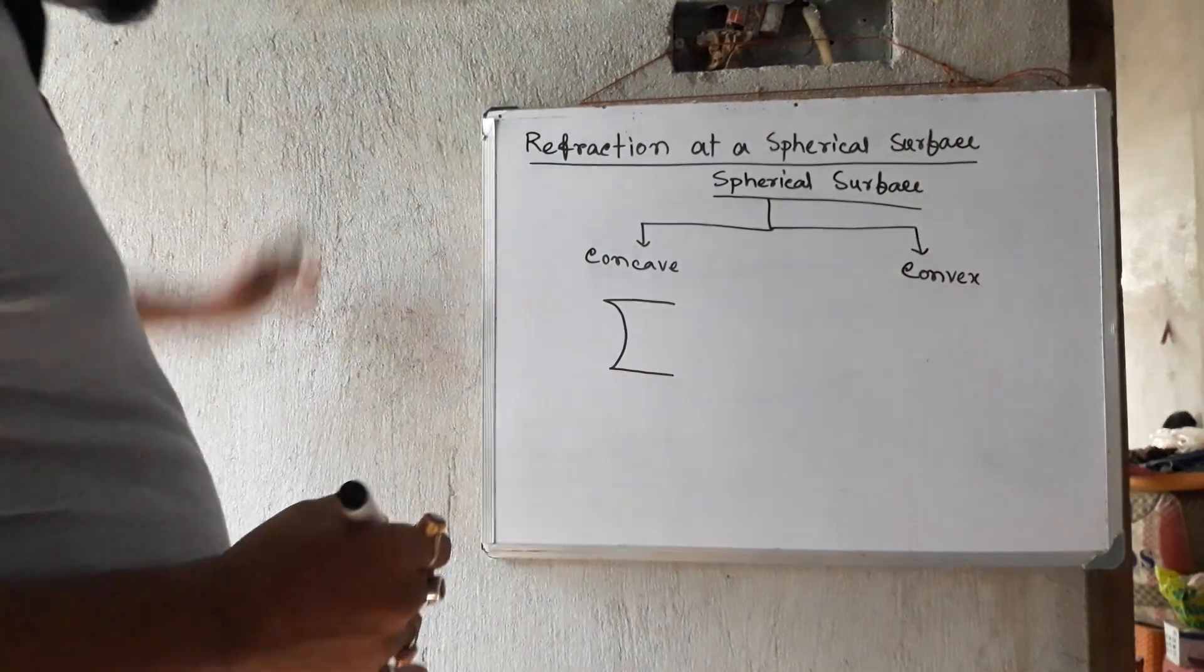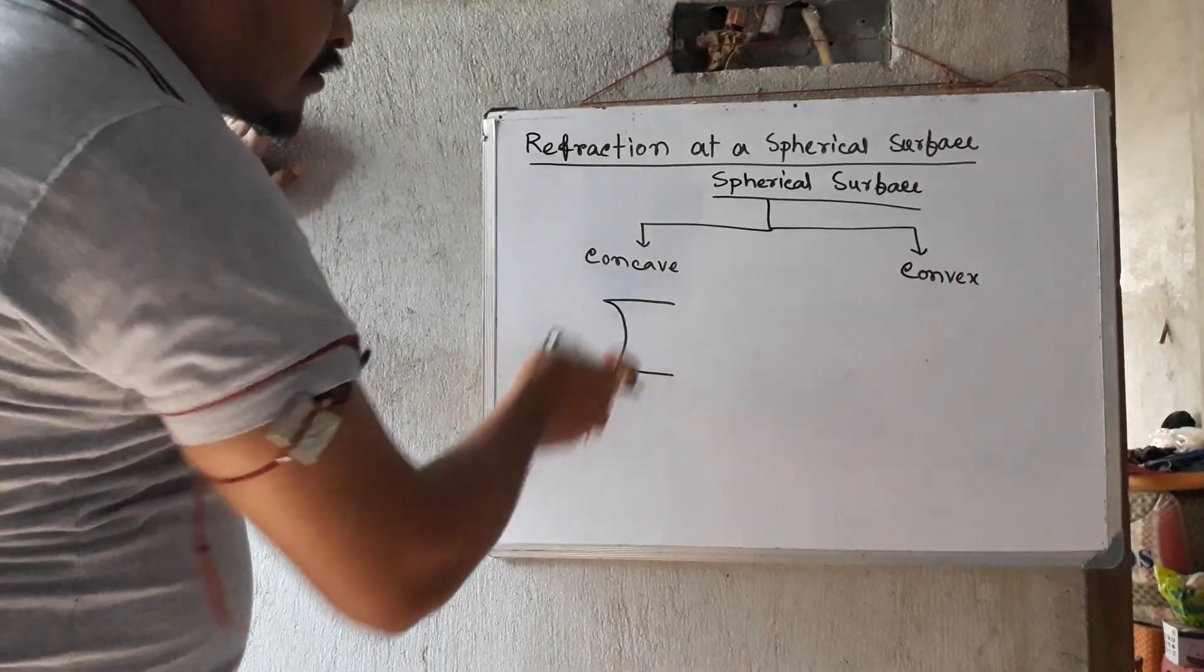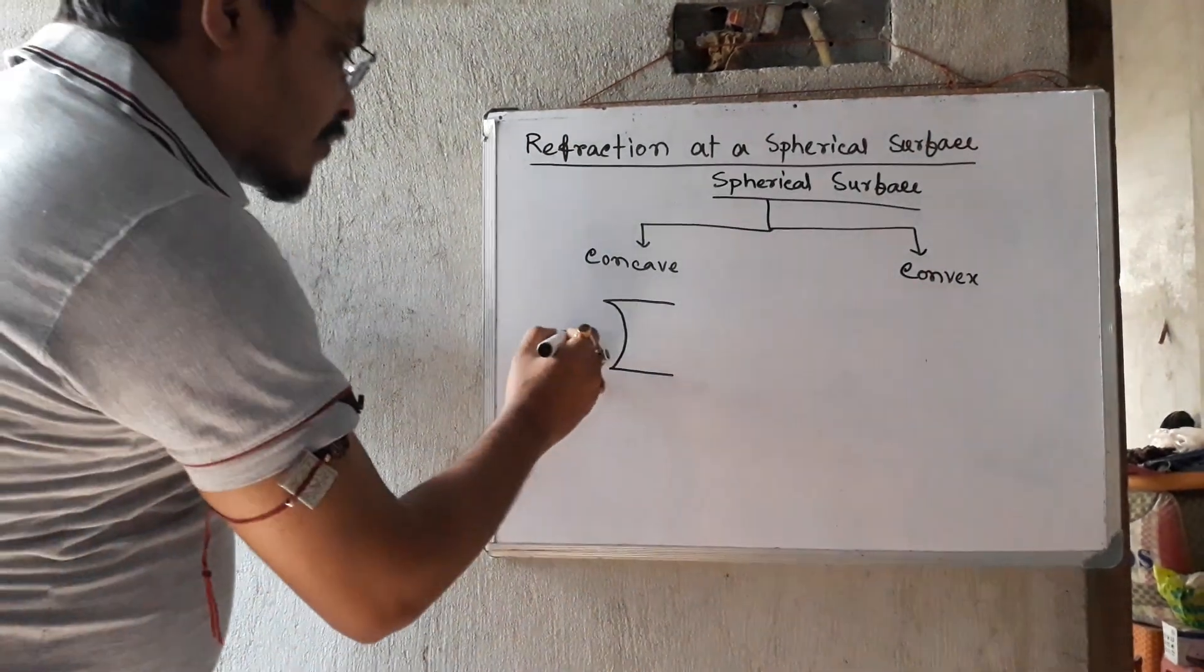Here are the spherical surfaces. The concave is one of the spherical surfaces. This is the center of curvature.